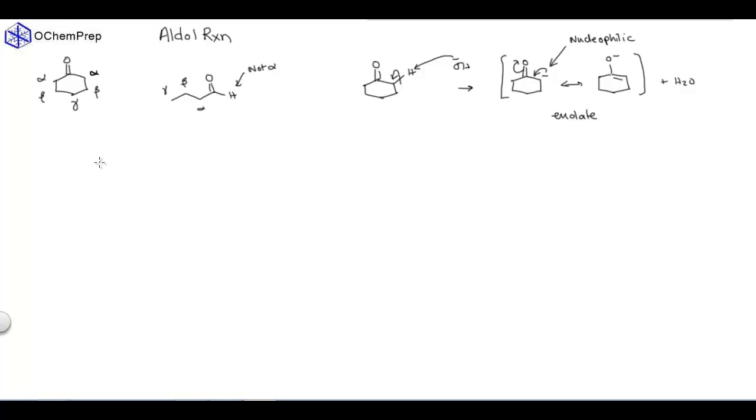So, I'm going to do an aldol reaction that uses acetaldehyde and benzaldehyde. Now, when you look at this, and then you treat it with OH minus, we're going to walk through the mechanism, and then I'll show you the product, and then I'll give you a trick to figure out the product, because it's always nice to know where you're going when you're doing a mechanism, but we're going to walk through the mechanism first.